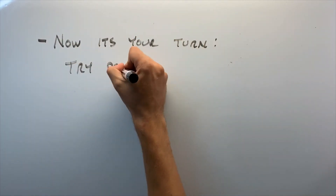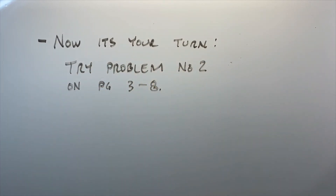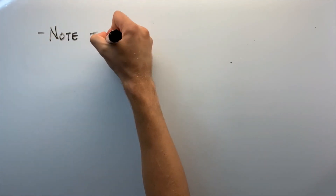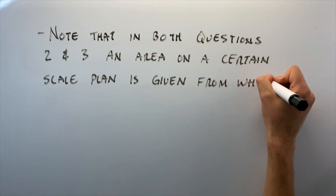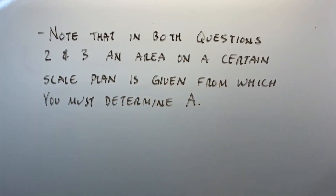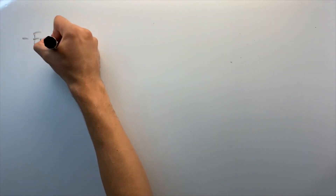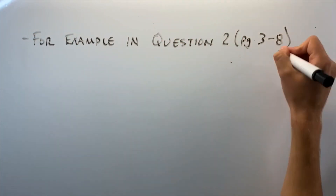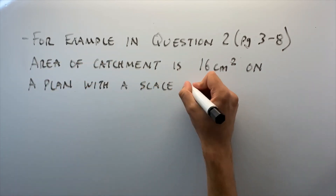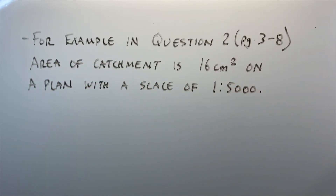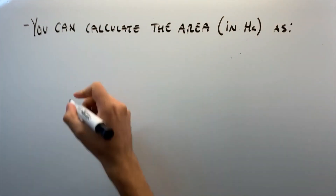Now you can go through and try problem number 2 on page 3-8. Note that in both questions 2 and 3, an area on a certain scale plan is given from which you need to actually calculate or determine A. For example, in question 2, the area of catchment is 16 cm² on a plan at 1 to 5,000.